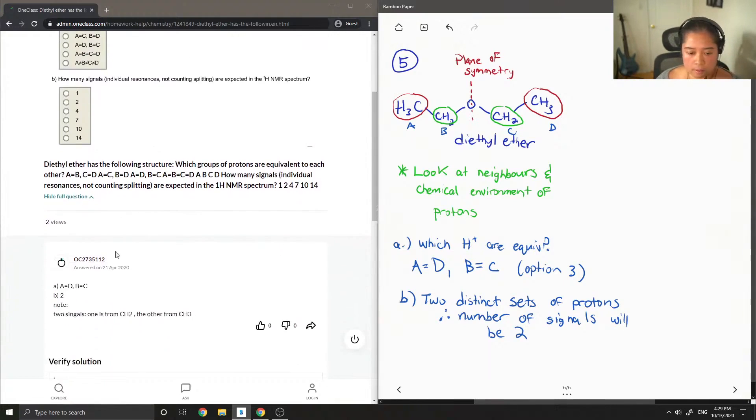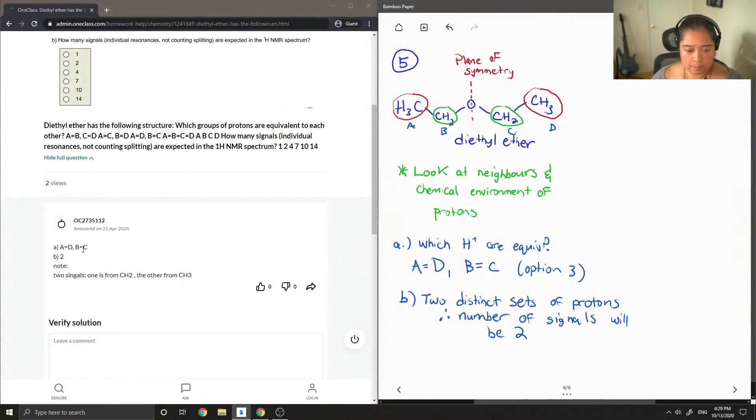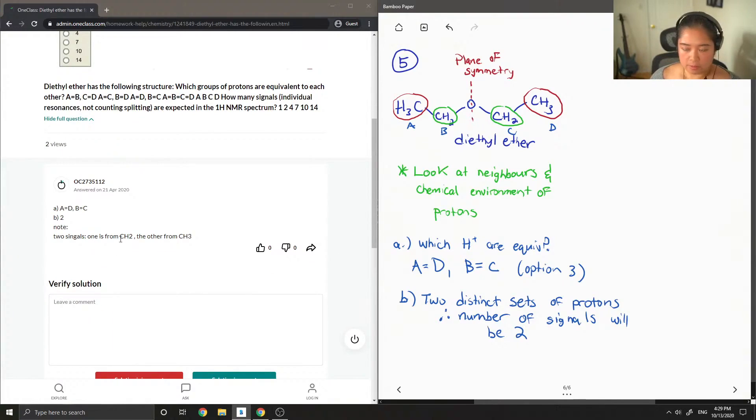A equals D, B equals C, B2. Yep, so one signal from the CH2, the other from CH3.